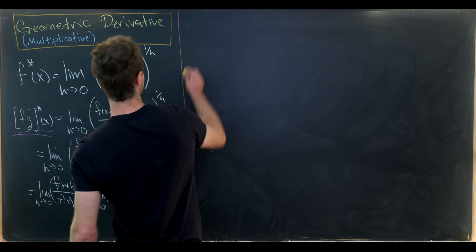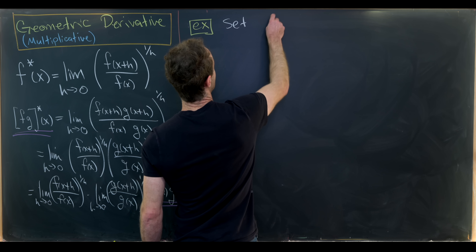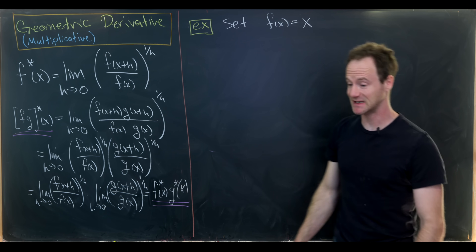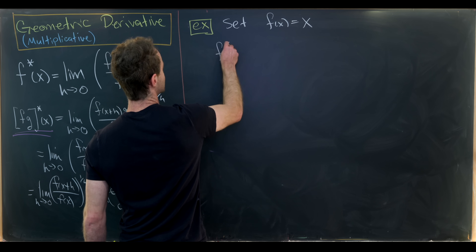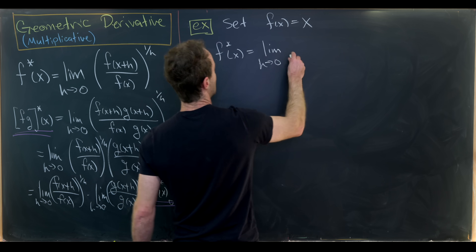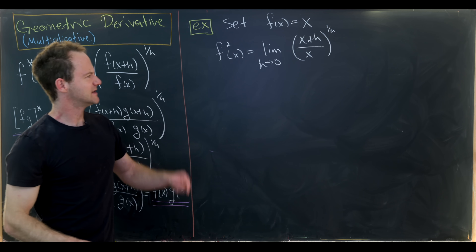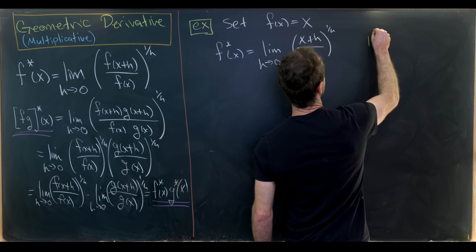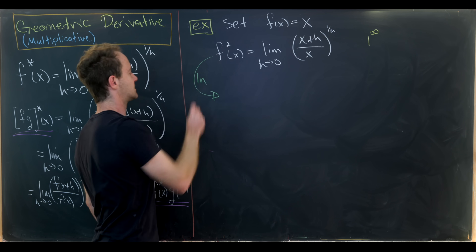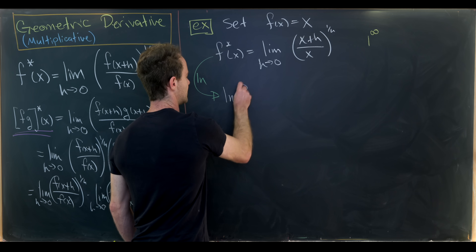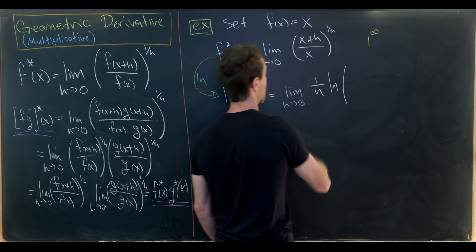Let's look at an example: the geometric derivative of a very simple function. Let's set f(x) = x — the identity function — and find its multiplicative derivative. So f*(x) equals the limit as h goes to zero of (x+h)/x all to the power of 1/h. This is of the indeterminate form 1^∞, which motivates us to take the natural log of both sides, leaving us with ln(f*(x)) equals the limit as h goes to zero of (1/h)·ln((x+h)/x).